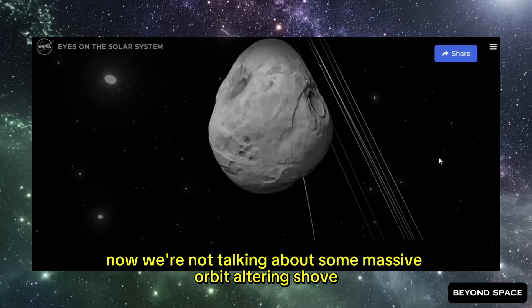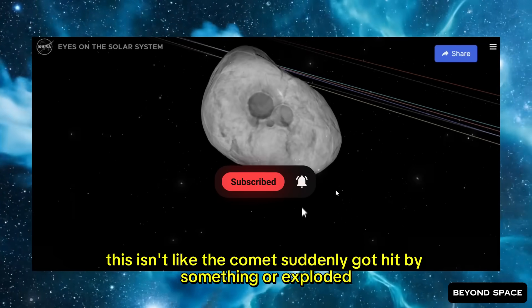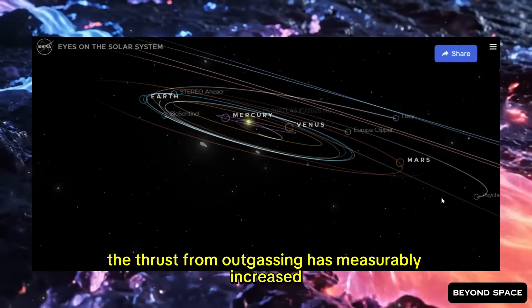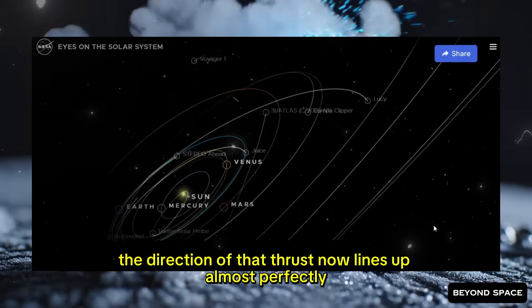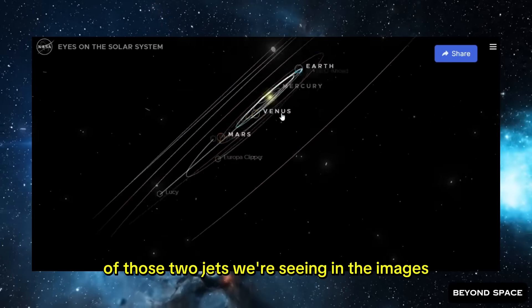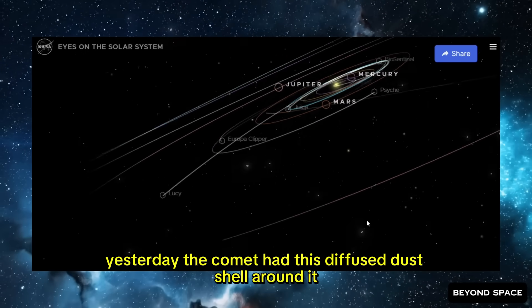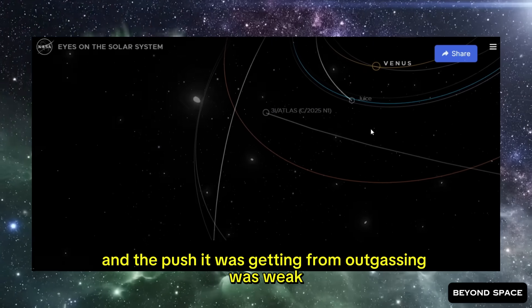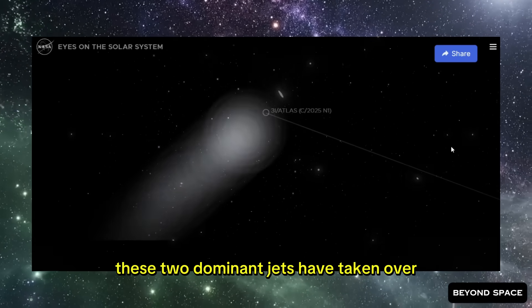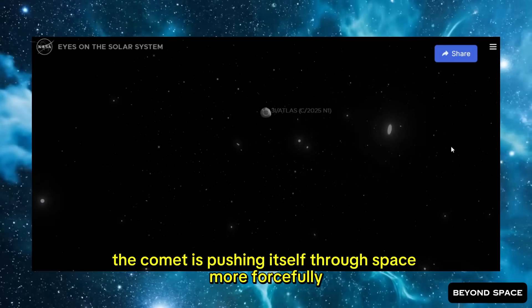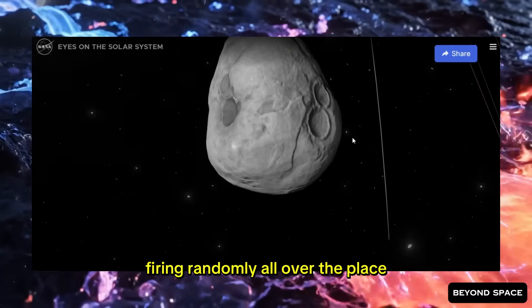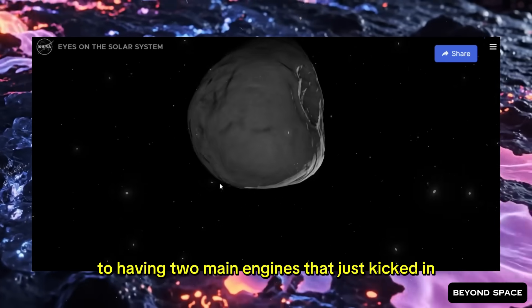Now, we're not talking about some massive orbit-altering shove. This isn't like the comet suddenly got hit by something, or exploded. But compared to what it was doing just a few days ago, the thrust from outgassing has measurably increased. And here's the kicker. The direction of that thrust now lines up almost perfectly with the average direction of those two jets we're seeing in the images. Think about what that means. Yesterday, the comet had this diffuse dust shell around it, and the push it was getting from outgassing was weak and kind of scattered in direction. Today, that shell has collapsed. These two dominant jets have taken over, and suddenly the comet is pushing itself through space more forcefully, and in a much more defined direction. It's like the comet went from having a bunch of little thrusters firing randomly all over the place to having two main engines that just kicked in.